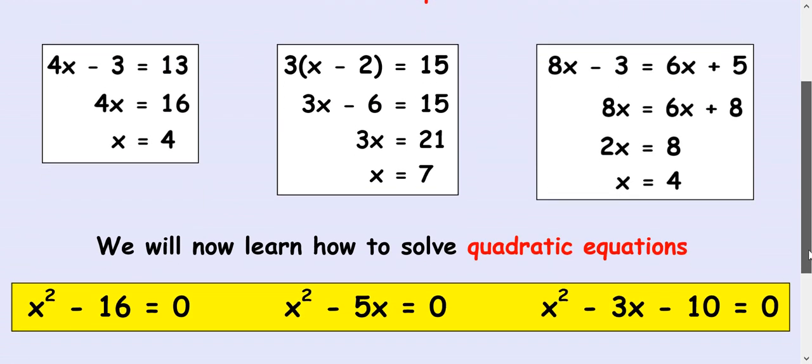Now a quadratic equation is slightly different because it's got an x squared in it. Another thing you'll notice about these three quadratic equations is everything's on one side and there's a zero on the other side.